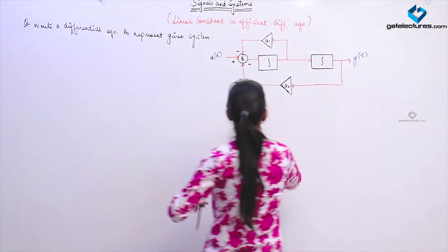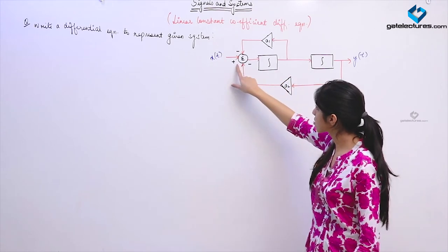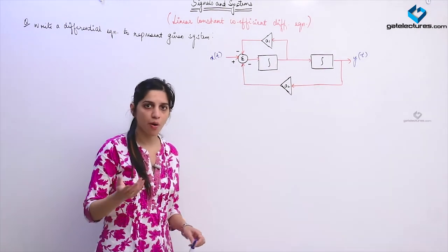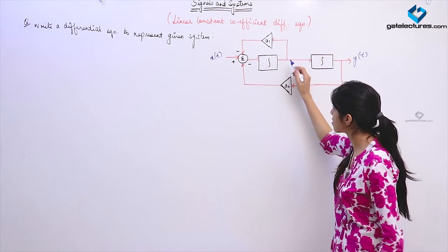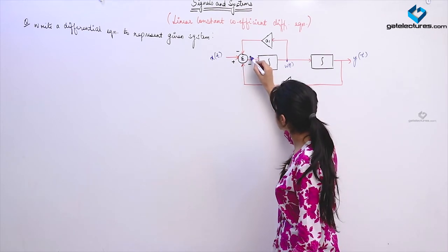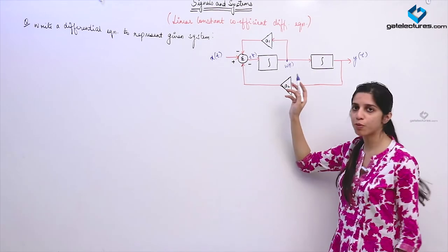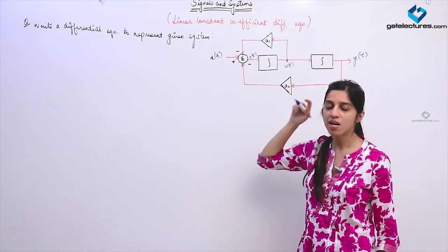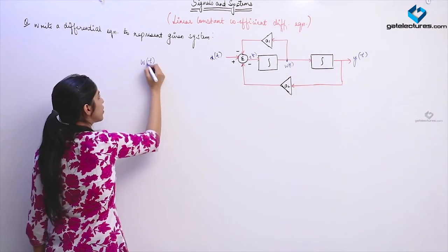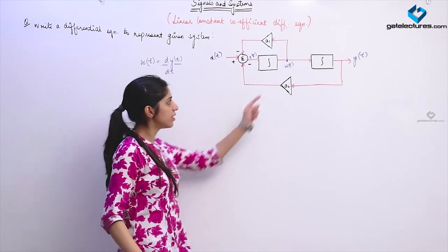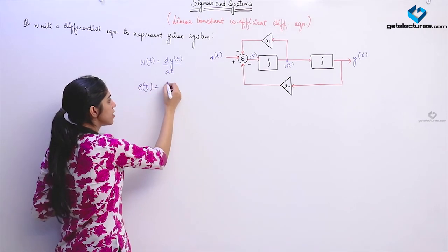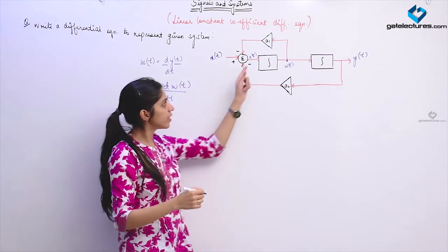Now they have given us an interconnection: integrators, a summer, and scalar multipliers. They are asking you to represent the system using a differential equation. Wherever we have different signals, suppose at one point the signal is W(t) and after the summer the signal is E(t). Since this is an integrator, W(t) is the differentiation of Y(t) — because integrating W(t) gives Y(t). Similarly, E(t) is the differentiation of W(t), because integrating E(t) gives W(t).